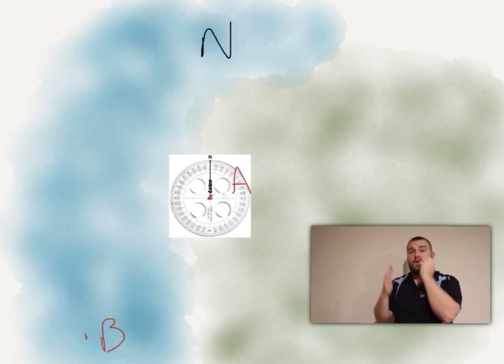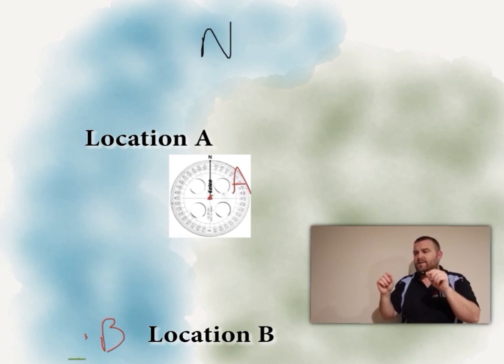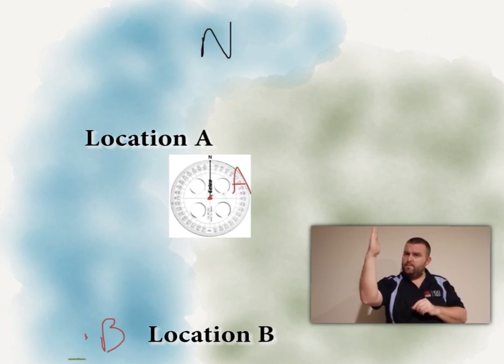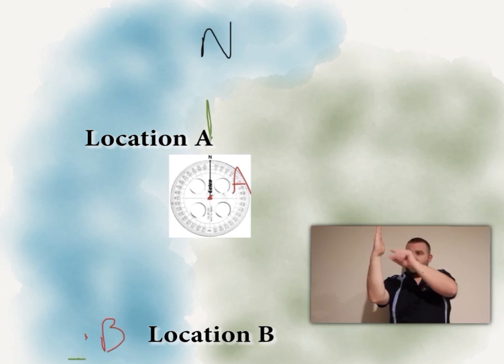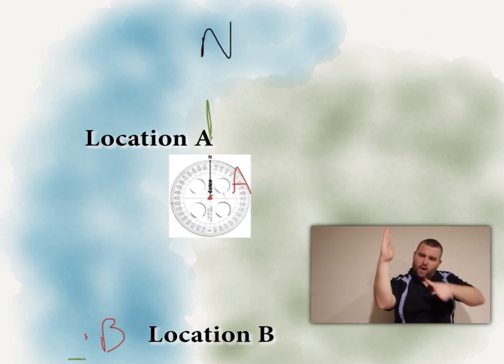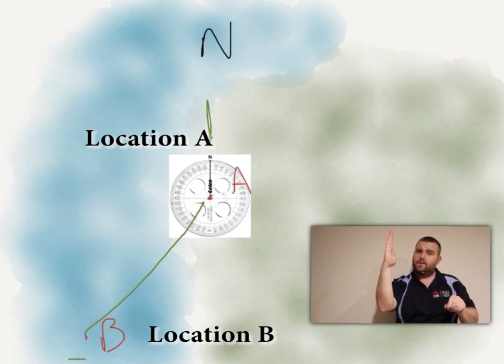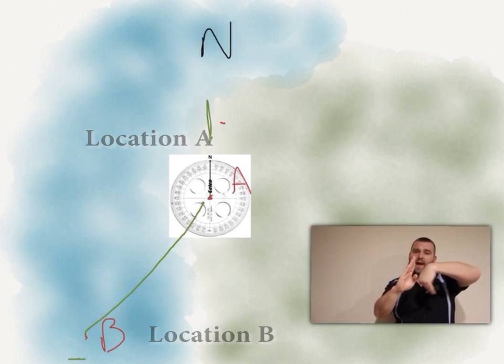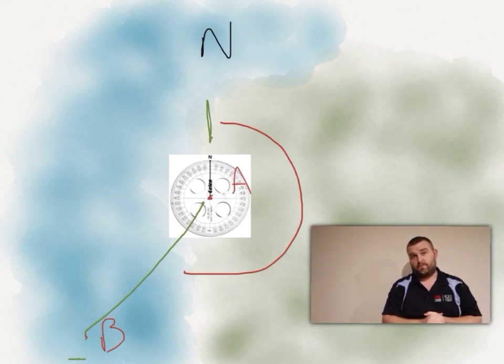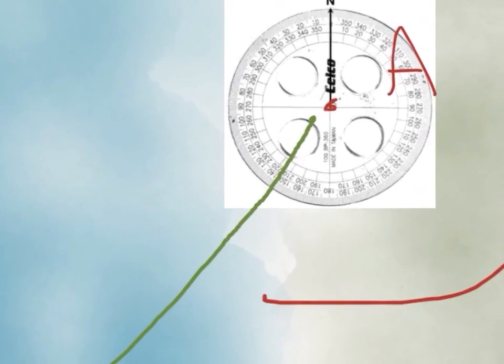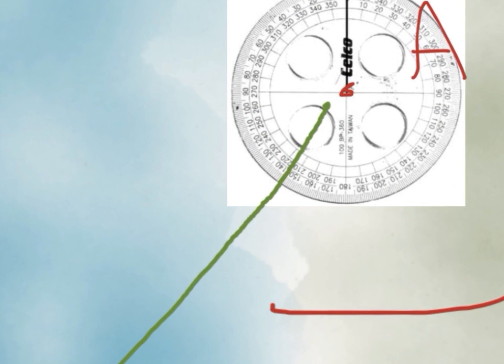So what you do is if you had two locations on a map, you would very simply plot north on one of them, then you'd point a line going down to where the next location is, then you'd work out using your protractor what the angle is to that location. That gives us a to-the-degree, much more accurate bearing for where the direction is.